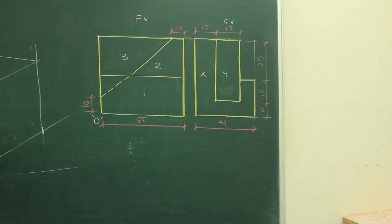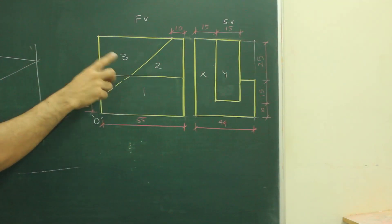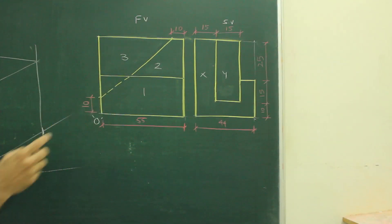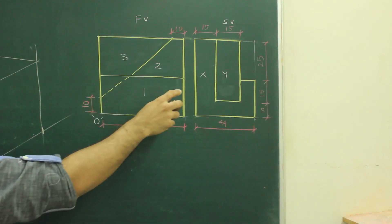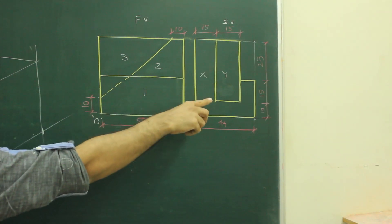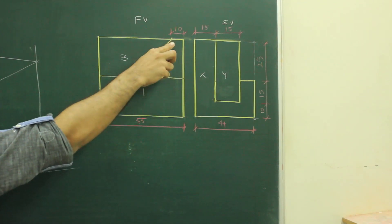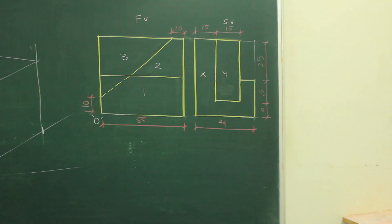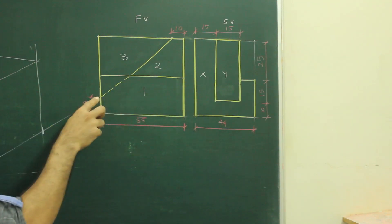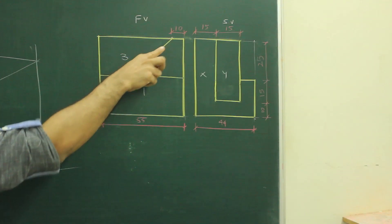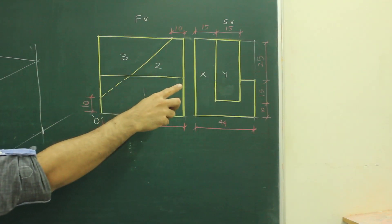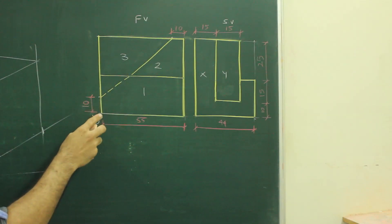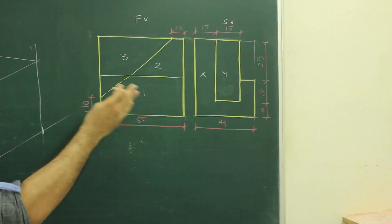Now, when I want to start, I will see 1, 2, 3 or x, y. So of course we will go for x, y because there are only two components. So what we will do, first we will start with x or y. Now if I see y, y is this part. This part is corresponding to y. And if I see x part, x part is full. So what we will do, first we will start with part x.